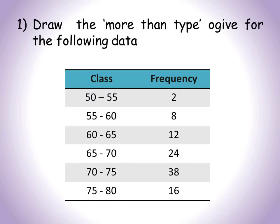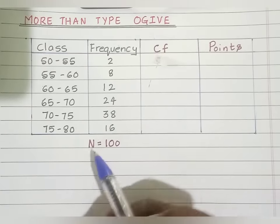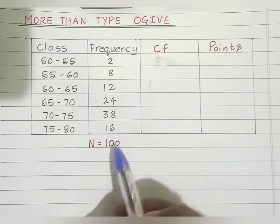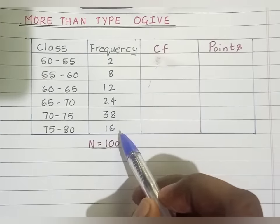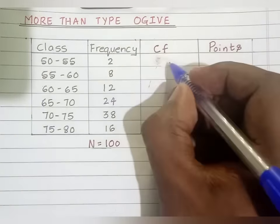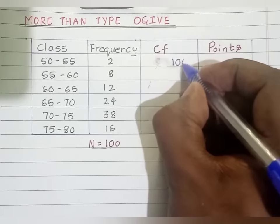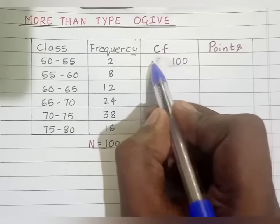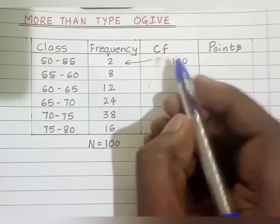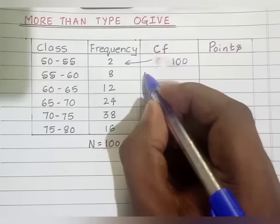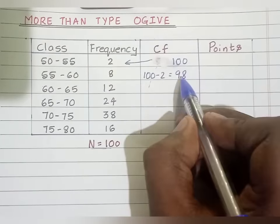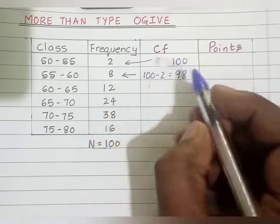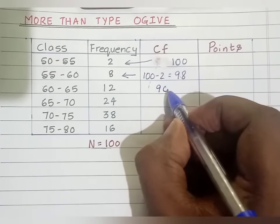Now, draw more than type OJAL for the following data. The first step is finding out the value of N, which is the sum of all the frequencies. The value of N is written as it is in the first position of the cumulative frequency column. The next value is found by subtracting: 100 minus 2 is 98. Then 98 minus 8 gives 90.